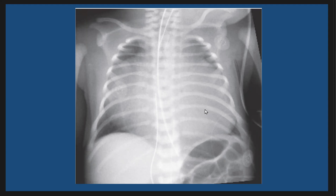Also as a differential diagnosis, we have pulmonary atresia with intact ventricular septum. In this lesion, we have an identical appearance of massive cardiomegaly arising from tricuspid insufficiency. Another differential diagnosis is pericardial effusion — a large pericardial effusion can mimic severe cardiomegaly, but there is no association with cyanosis or decreased pulmonary vascularity.